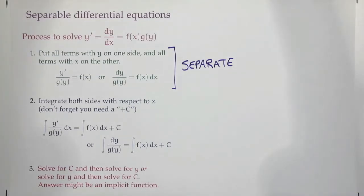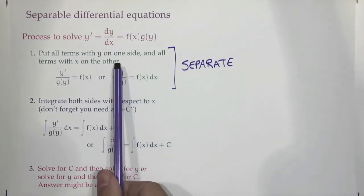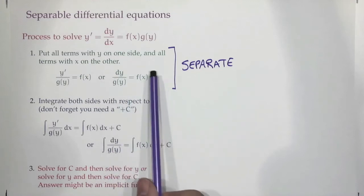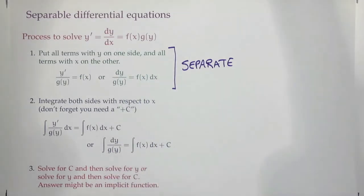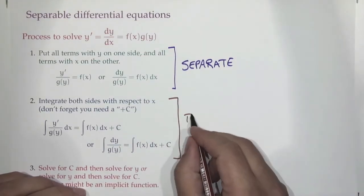We've separated the two, and the nice thing is there's no x-y interchange going on on the same side. We can think of it as the derivative on one side involving only y, and on the other side only x. We've sorted them into their two parts. That brings us to step two: after you've separated, now you integrate.